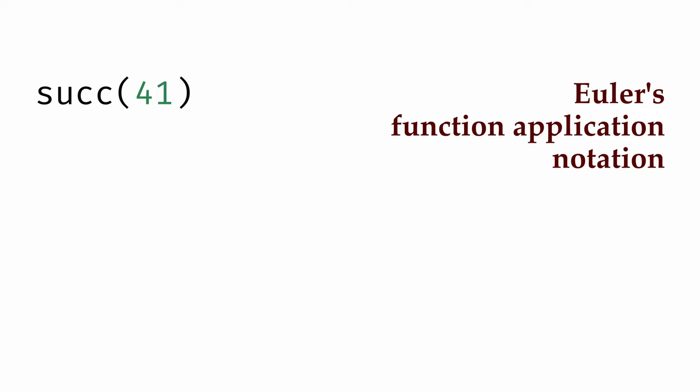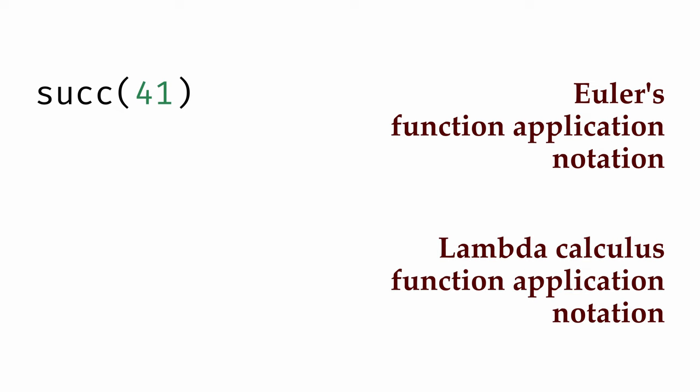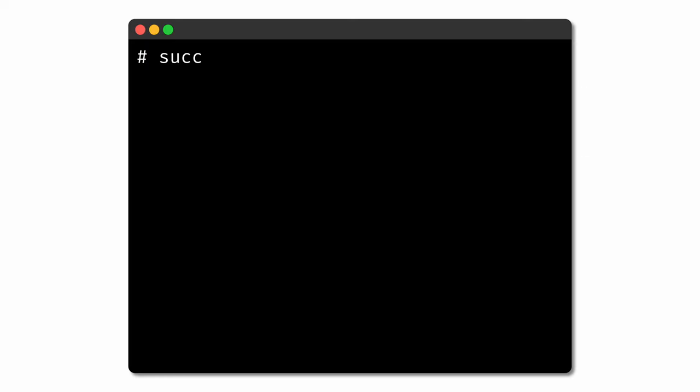In OCaml, we'll instead follow the notation used by Alonzo Church in the lambda calculus. Since functions and the applications of functions are so central to computation, we omit the parenthetical notation and instead apply a function just by specifying the name of the function followed by its argument. For example, we take the successor of 41 by naming the successor function and then providing the argument 41 — no need for parentheses. The function is applied to 41, and we get the integer value 42 as output.